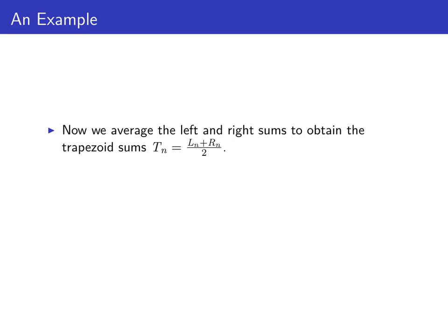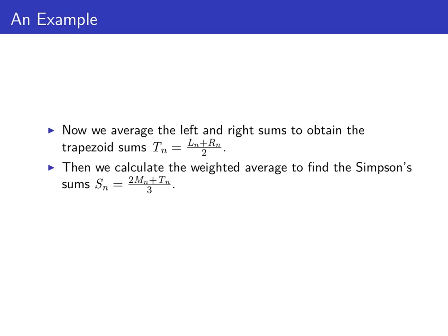Now to get the trapezoid sum, we'll just average the left and the right sums. And then to get the Simpson's sum, we take the weighted average: two thirds of the middle sum plus one third of the trapezoid sum. And we'll summarize the results on the next slide.